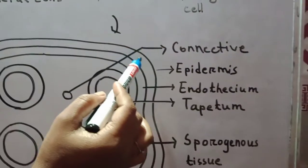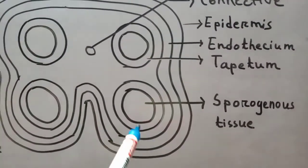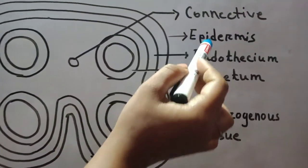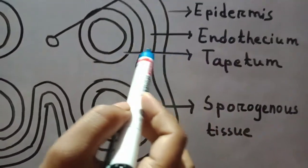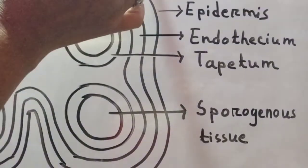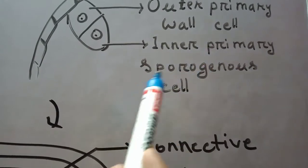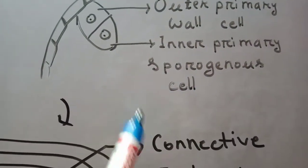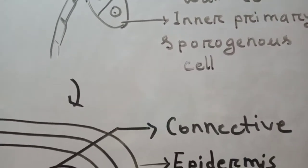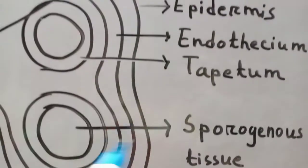walls of the microsporangium: epidermis, endothecium, tapetum. And inner primary sporogenous cells further divide to form sporogenous tissue.